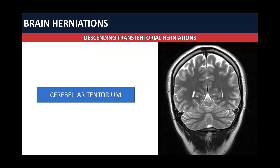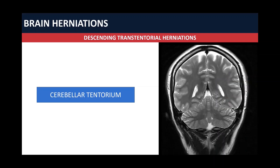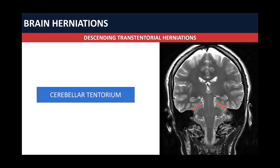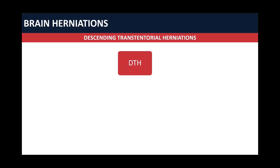To identify the cerebellar tentorium, we are going to trace firstly the falx cerebri, highlighted in yellow. Now we are going to trace the cerebellar tentorium, which is attached to the falx in the more posterior slides. Going anteriorly, we can see the tentorium attached to the falx, and then there is no more falx and the tentorium is open — that's the notch. You can see here the brain stem passing all the way down through this notch.